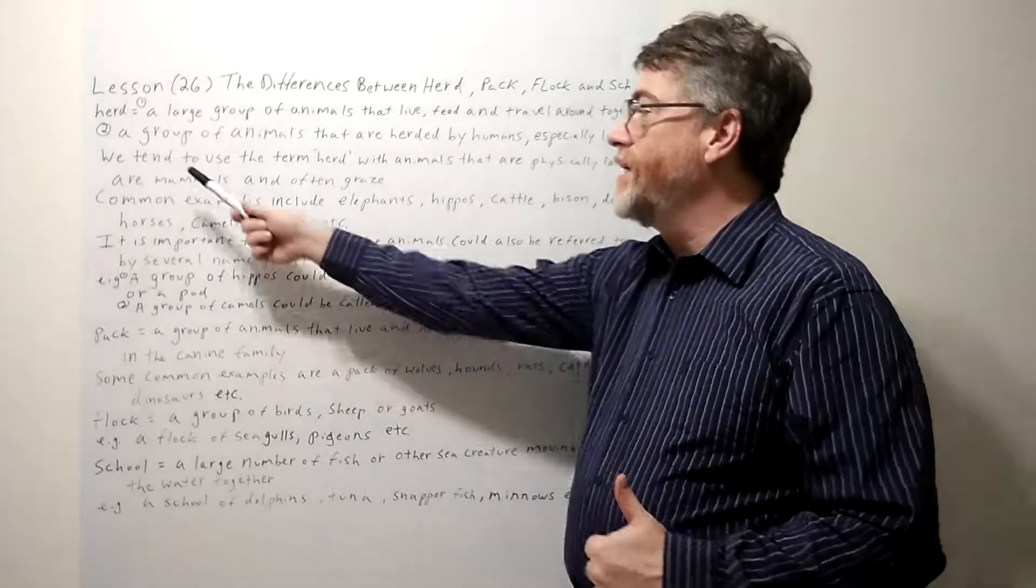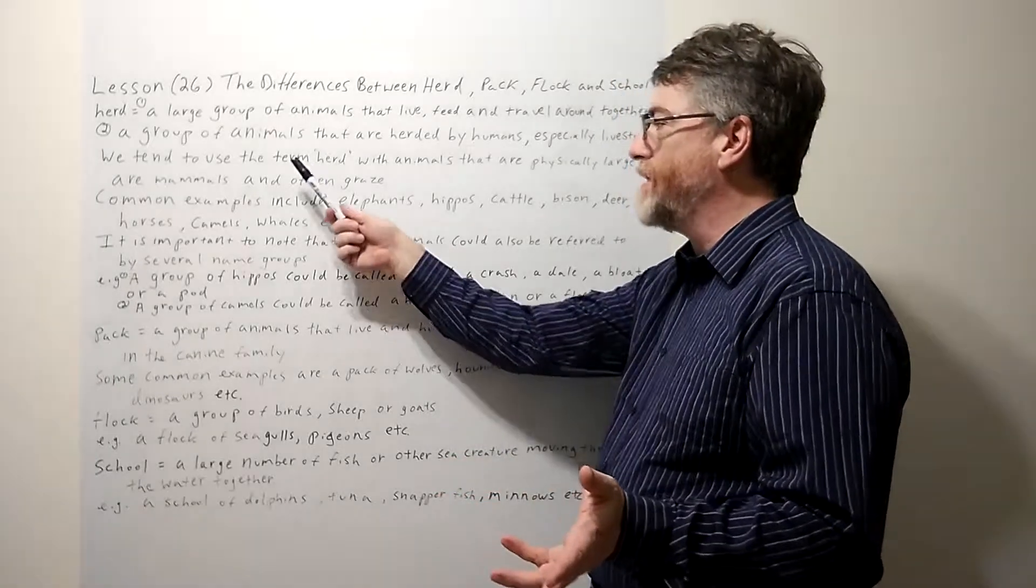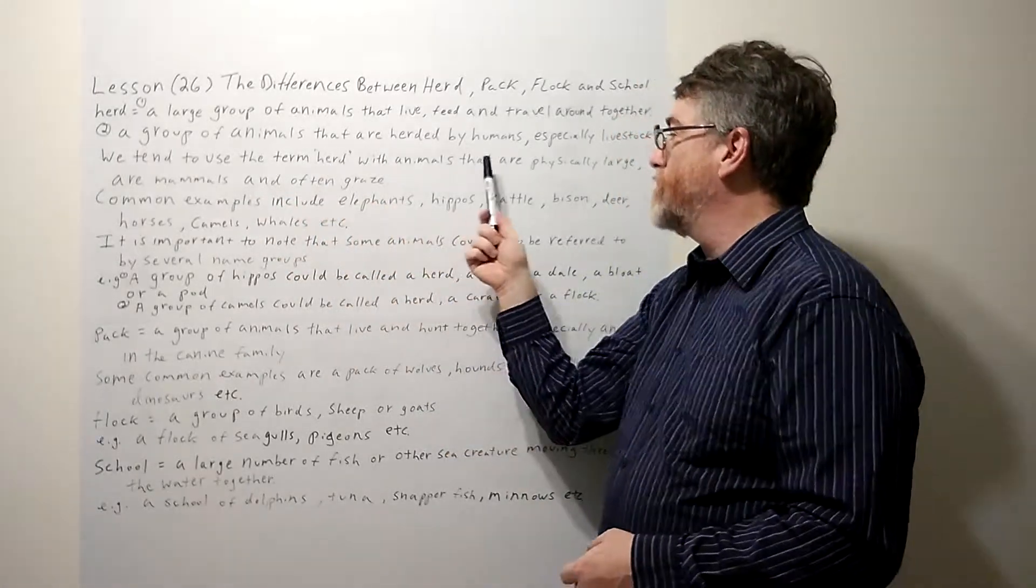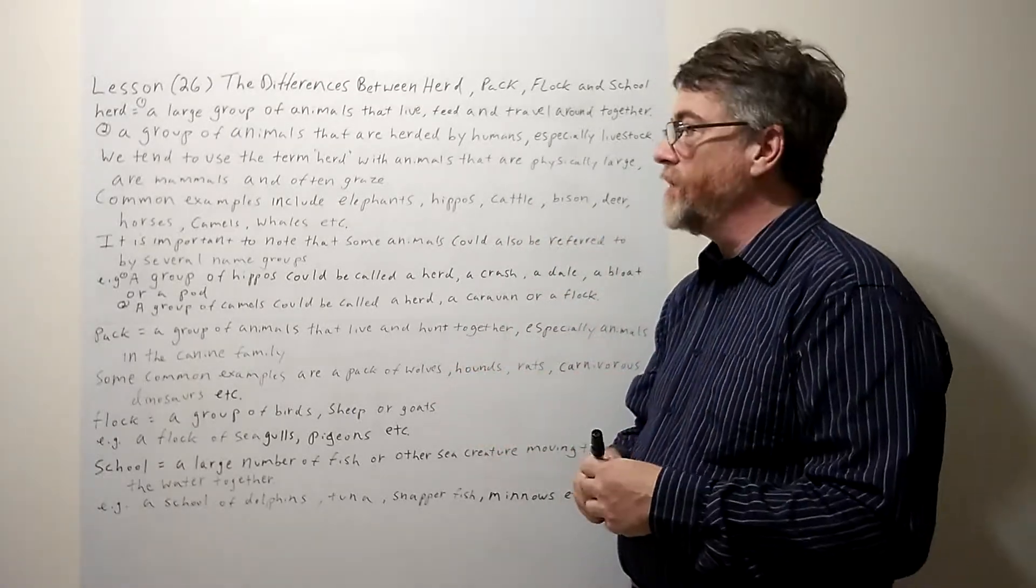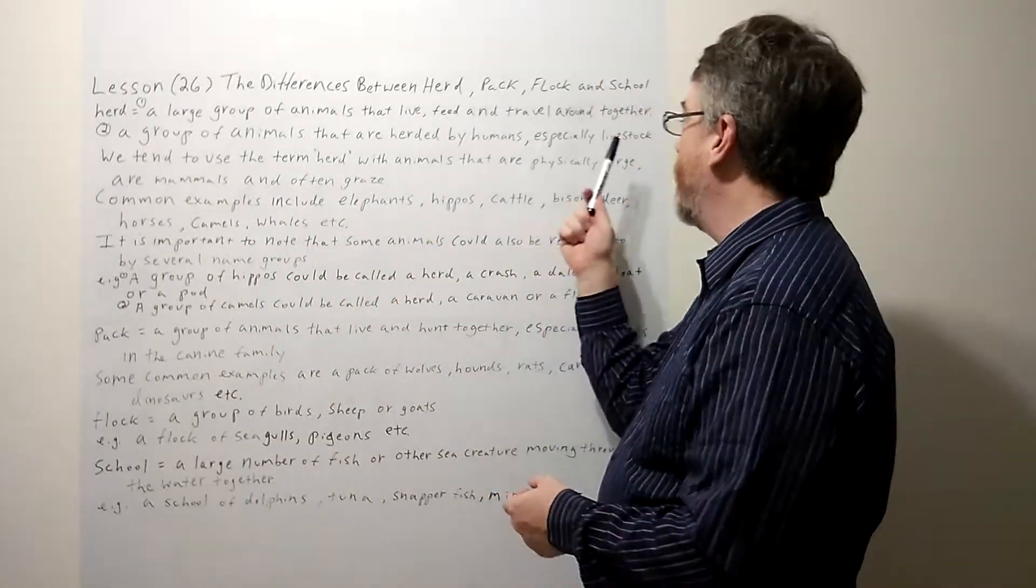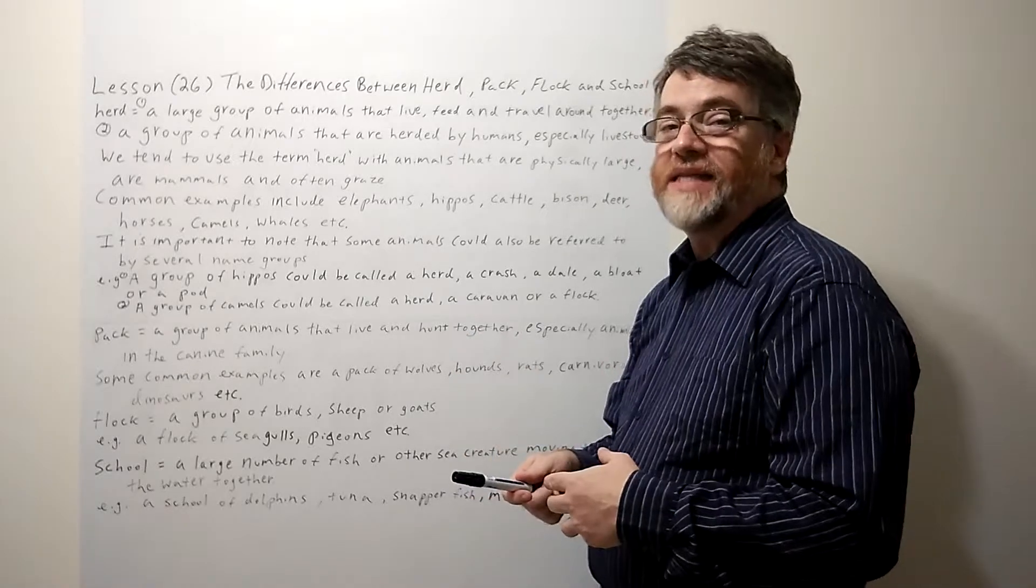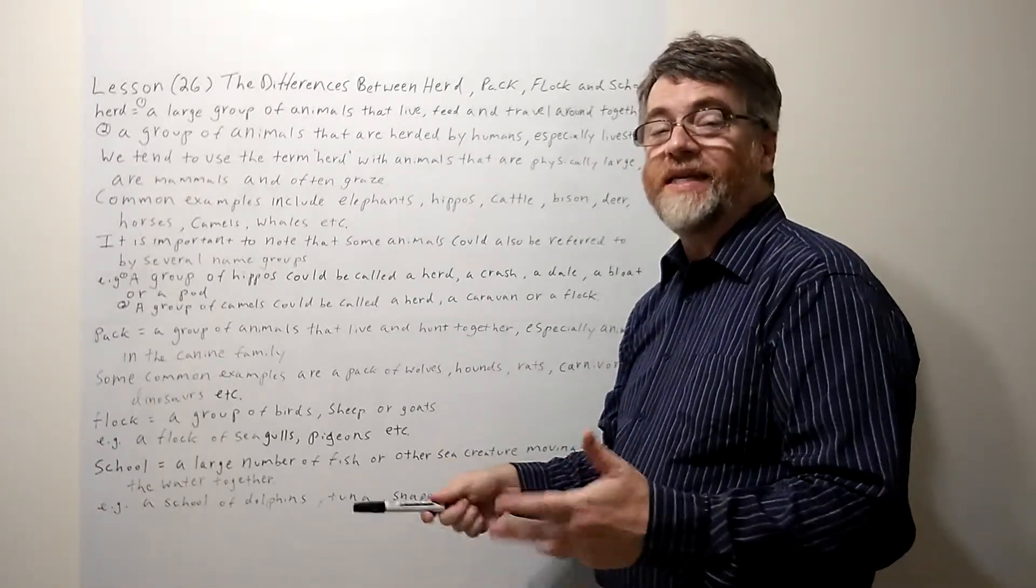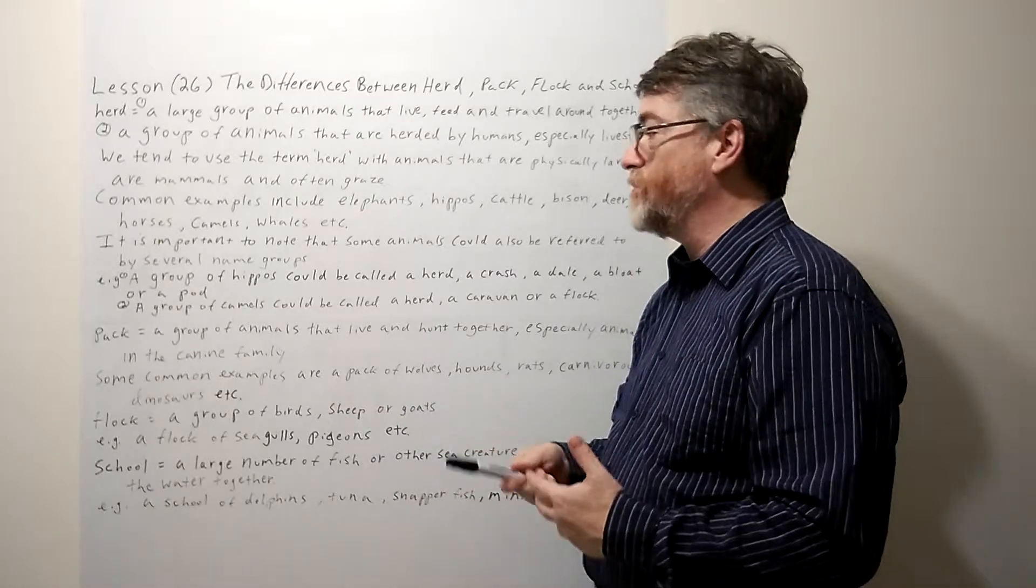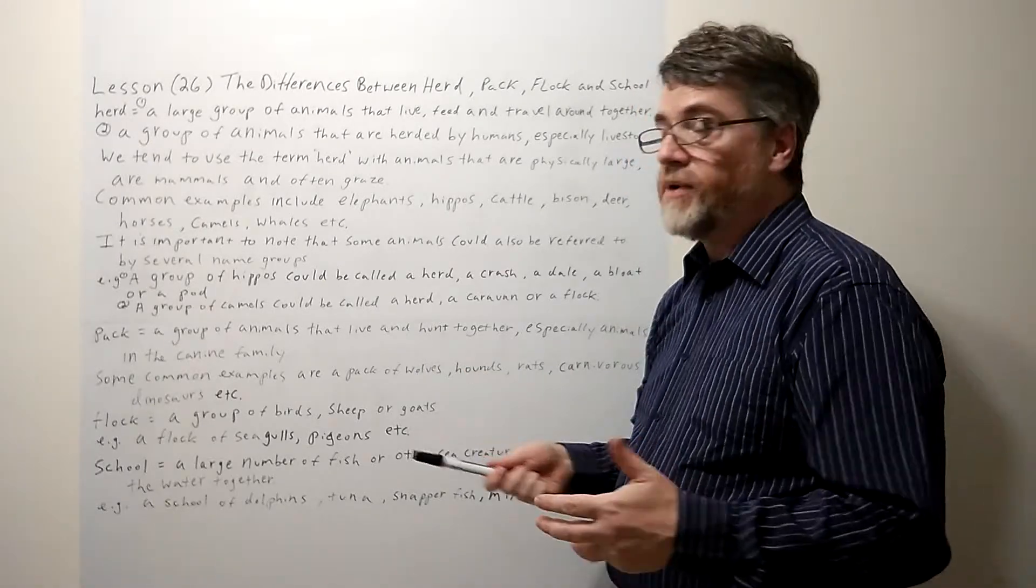Animals that would fall into the livestock category, a lot of them we might use the word herd for. Here's some other hints that might help you. We tend to use the term herd with animals that are physically large, especially large animals that are mammals and often graze. Most livestock graze. Remember, graze means to eat grass, eat the natural grass. Farmers often take their animals out to graze because that's what they feed on mostly.